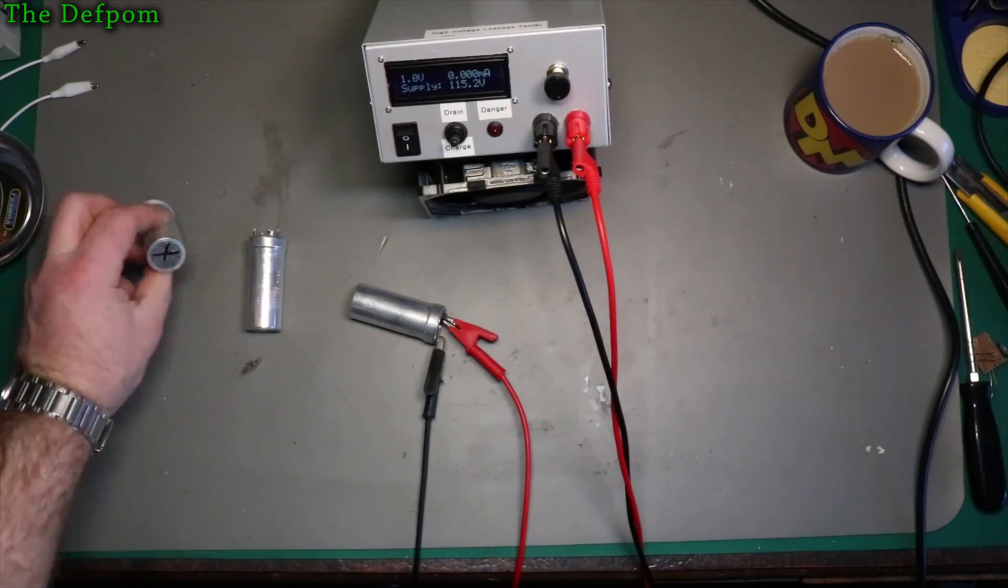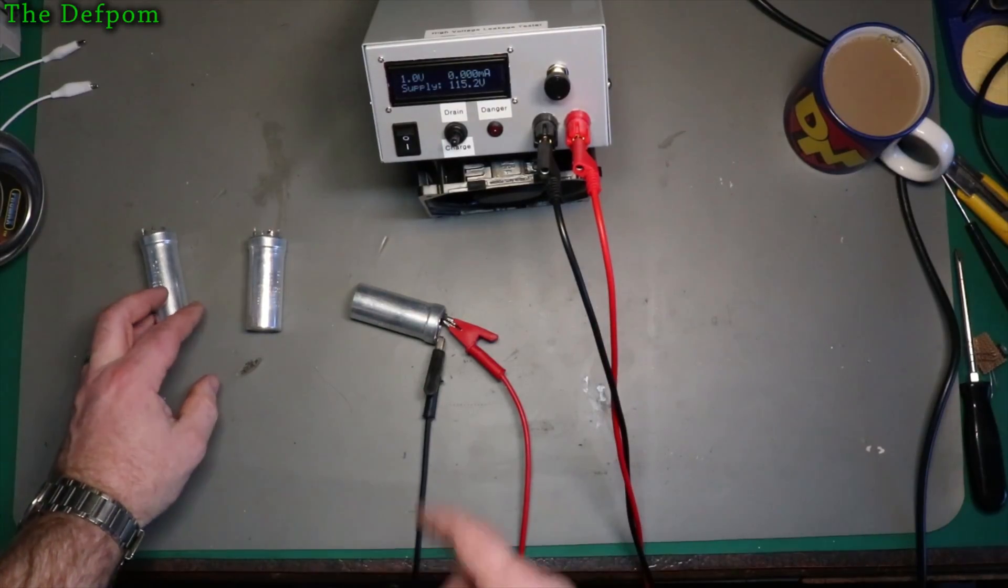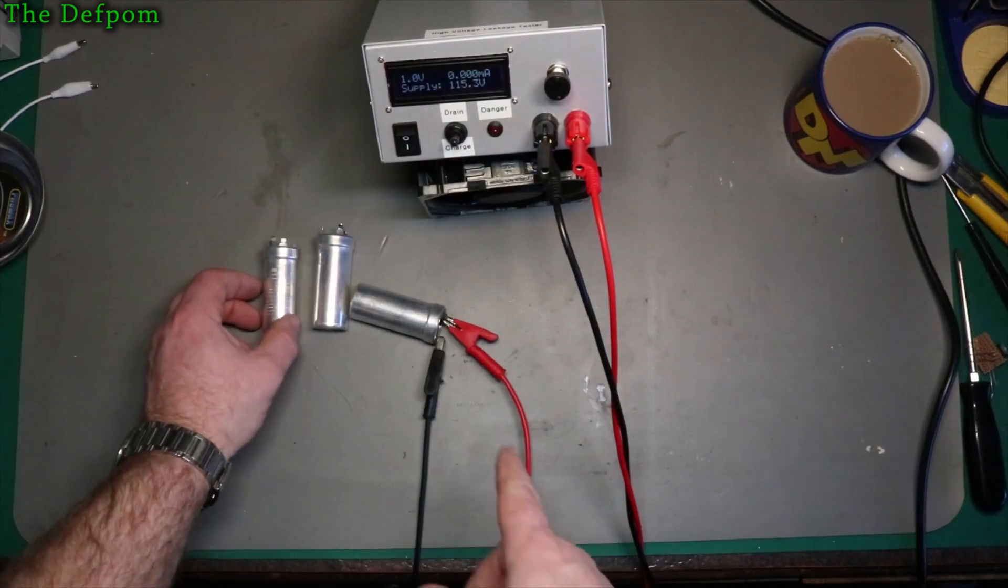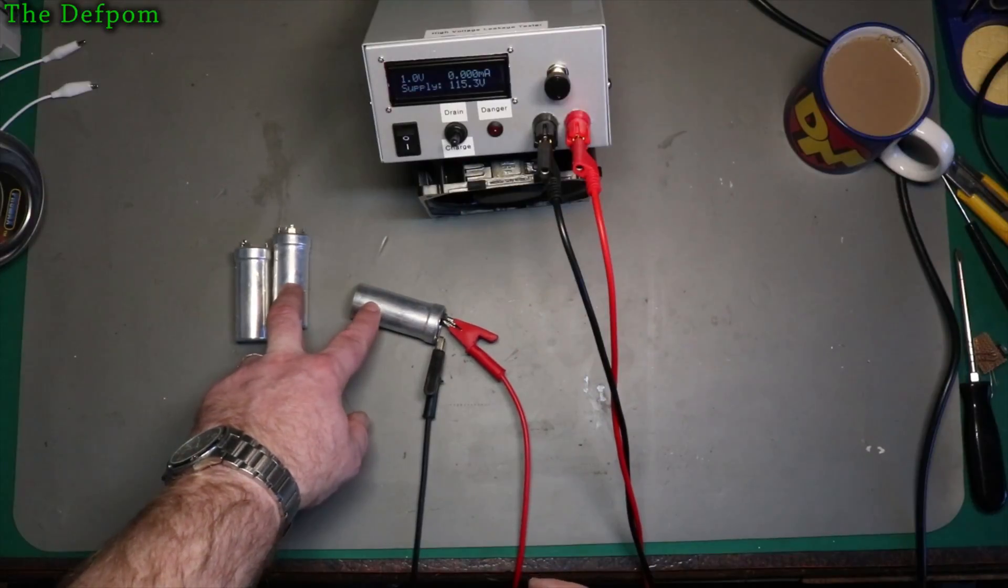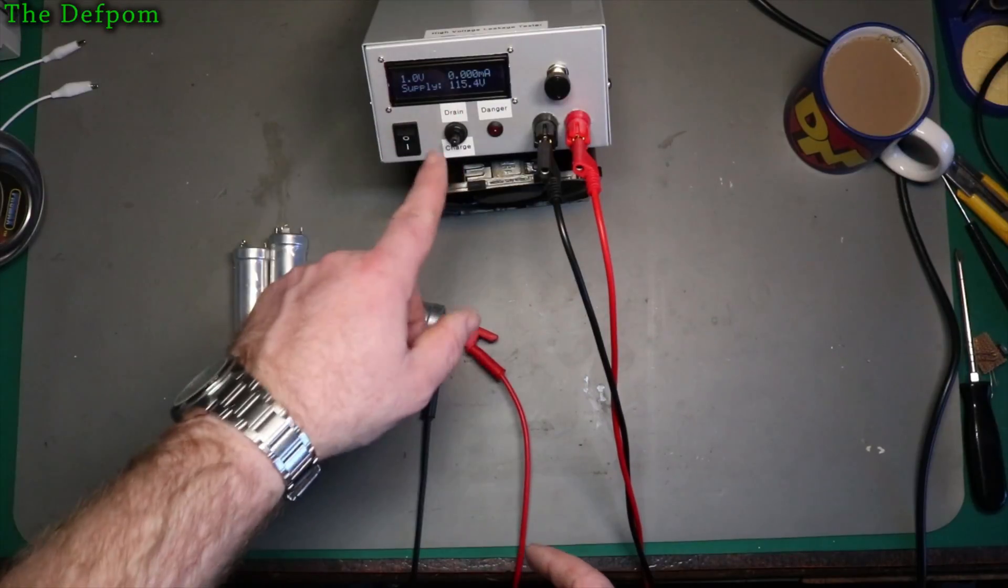And this is the cap which was bad, which is what it's got next on it. I just want to see how they come out on the leakage tester to see what kind of result you actually get from the tester. Now these two caps tested okay on my other units, so we'll see what this thinks of it.